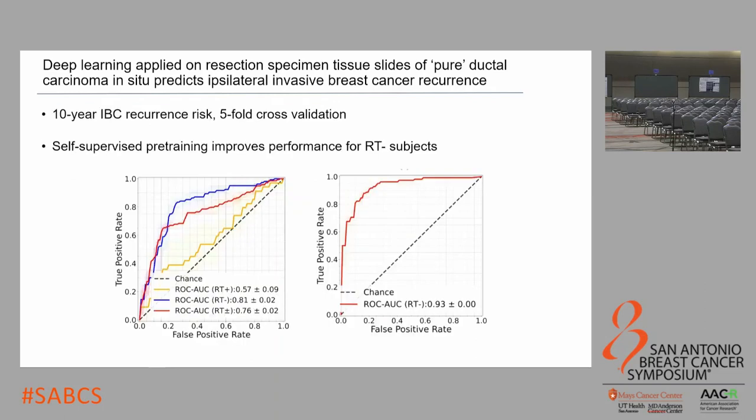For predicting recurrence using five-fold cross-validation, for radiotherapy-negative patients they achieve an AUC of 0.81, which is quite high. They also show that if instead of training directly with labels they train the model to learn canonical patterns present in the slide — what they call self-supervision — they can significantly improve performance, increasing from 0.81 to 0.93, which is quite high for predicting future risk.